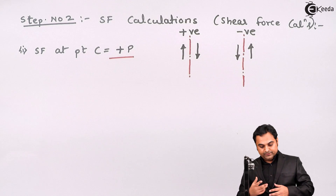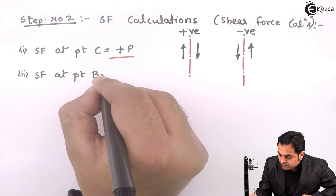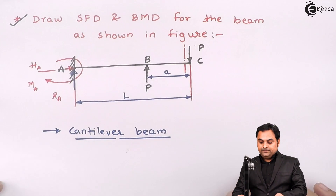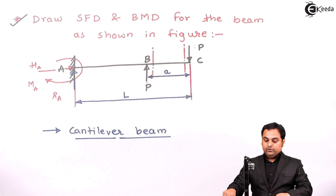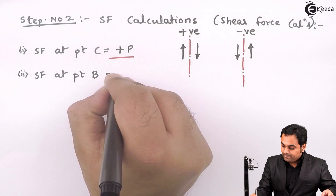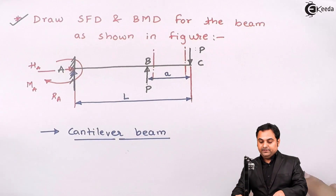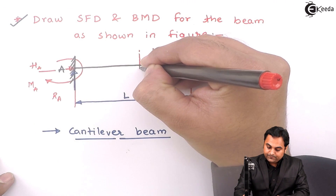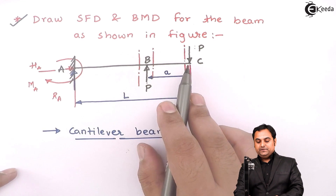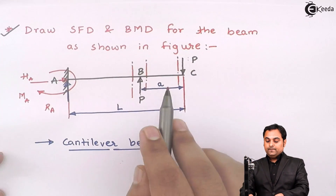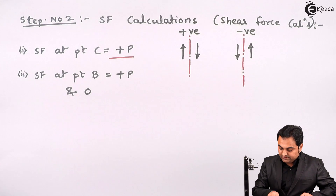SF at point B: as there are no forces present between C to B, the value of shear force will remain constant up to point B, so it is again plus P. Another value of shear force at point B: if I take the section to the left of B, on the right-hand side we have P as positive (right and downward) giving plus P, and this P on the right-hand side upward is negative, so plus P minus P cancels out and the value is zero. So these are the two values at point B.